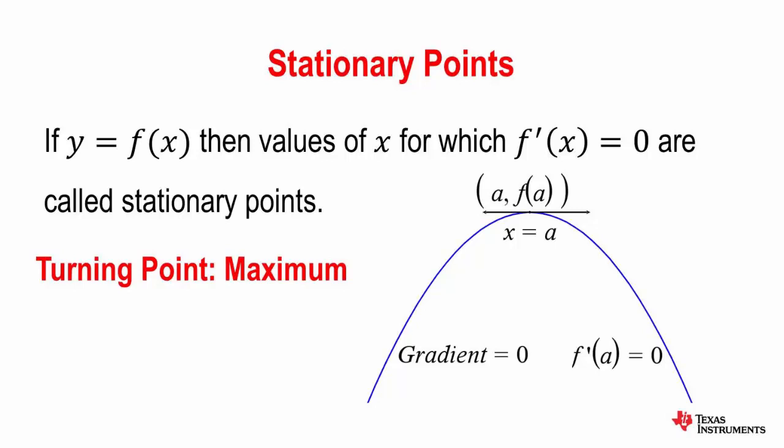For a maximum and a minimum the gradient changes sign from positive to negative or negative to positive at the turning point.